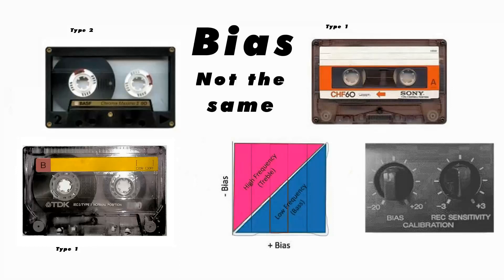The little diagram in the middle there shows you the correlation between bias level and response of the tape. If you apply more bias, you'll get a better low frequency response but you'll lose the treble. If you take the bias down, you'll gain some treble but you'll lose some bass.